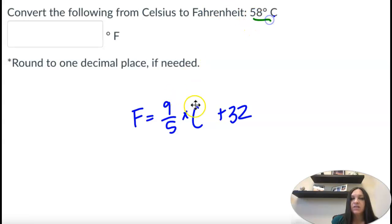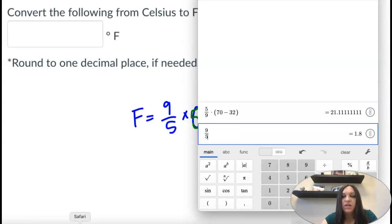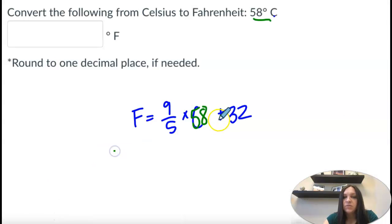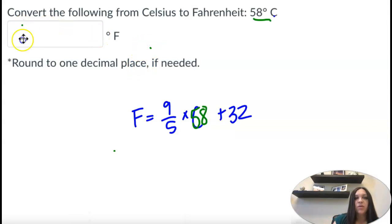And C is 58. So from here, this is order of operations. It multiplies then adds. So if you want to add parentheses you can, but you don't have to. 9 fifths times 58, plus 32. So 136.4 Fahrenheit.